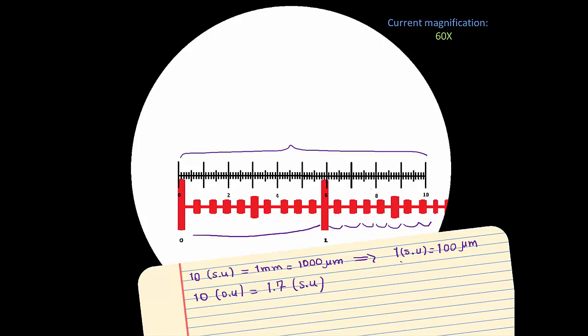Now, because we know that 1 stage unit is 100 microns, I can replace 1.7 with 170 microns. I will rewrite the left side of the equation, 10 ocular units. This means if I divide through by 10, I will have 1 ocular unit is equal to 17 microns. And let's not forget, this result is only valid when you're dealing with the 60x objective lens.